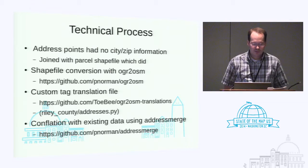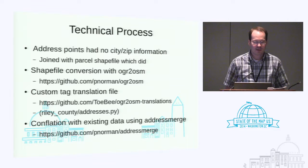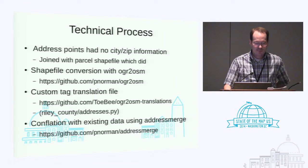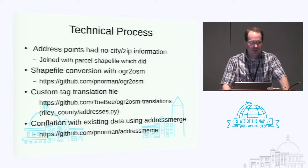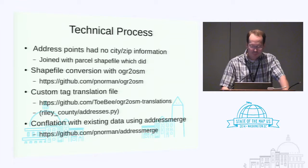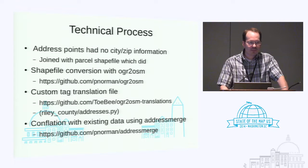So here's the technical process I used. Basically, the building centroids didn't have city or zip information, so I got those from the parcel data that I ended up not using initially. Then I converted it with OGR to OSM and had my own tag translation file — it's all written in Python. And then I used Paul Norman's address merge to conflate the data, strip out duplicates, and expand points onto building outlines when reasonable to do so. I actually worked with him — he was developing this software as I was doing the import, so I was kind of his tester and person who requested new features.